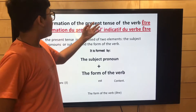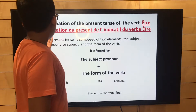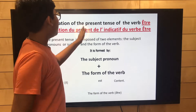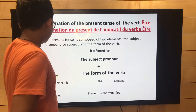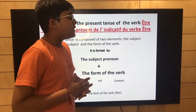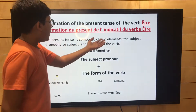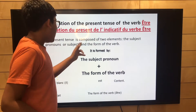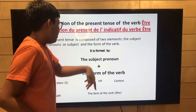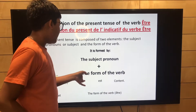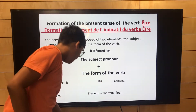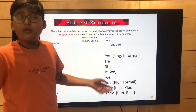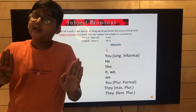The present tense of the verb être is composed of two elements: the subject pronoun and the form of the verb. It is formed by the subject pronoun plus the form of the verb.